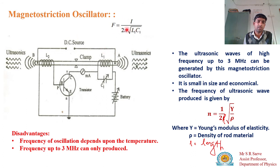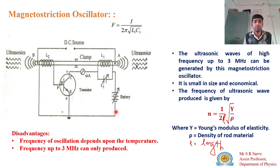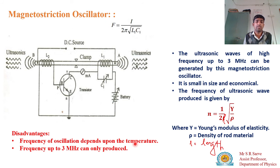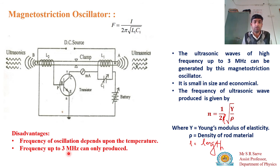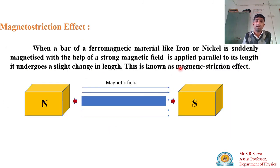The disadvantages of the magnetostriction oscillator are: since the rod is repeatedly magnetized and demagnetized, there is a heating effect. As temperature increases, the oscillation becomes unstable and eventually cannot be sustained. Also, it can only produce frequencies up to three million Hertz. If you need frequencies higher than three million Hertz, you must use a piezoelectric oscillator instead.